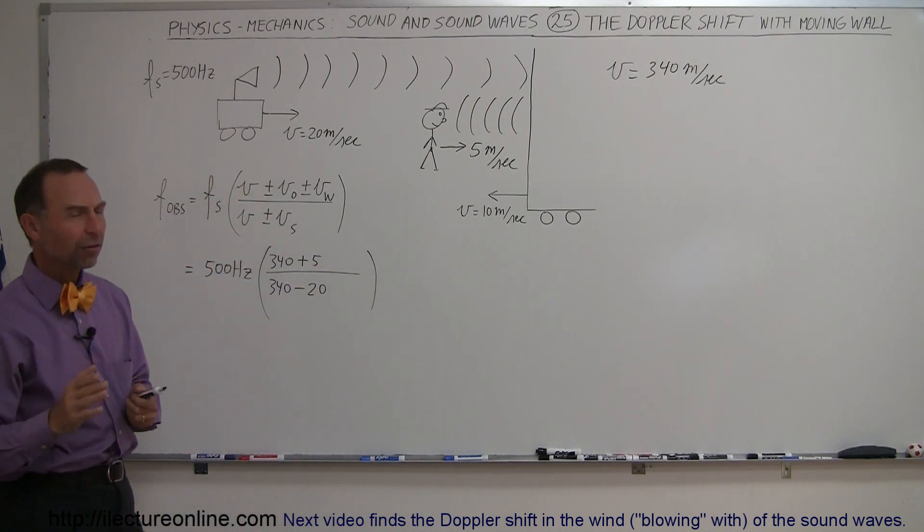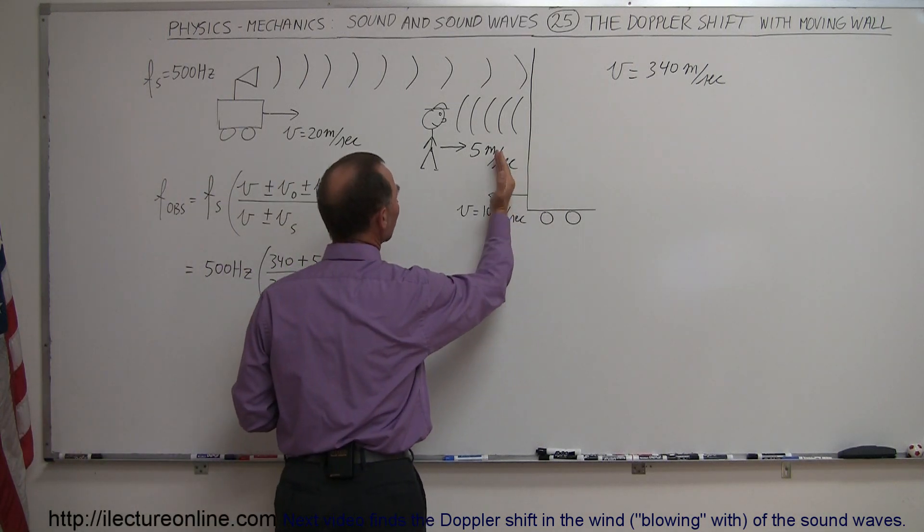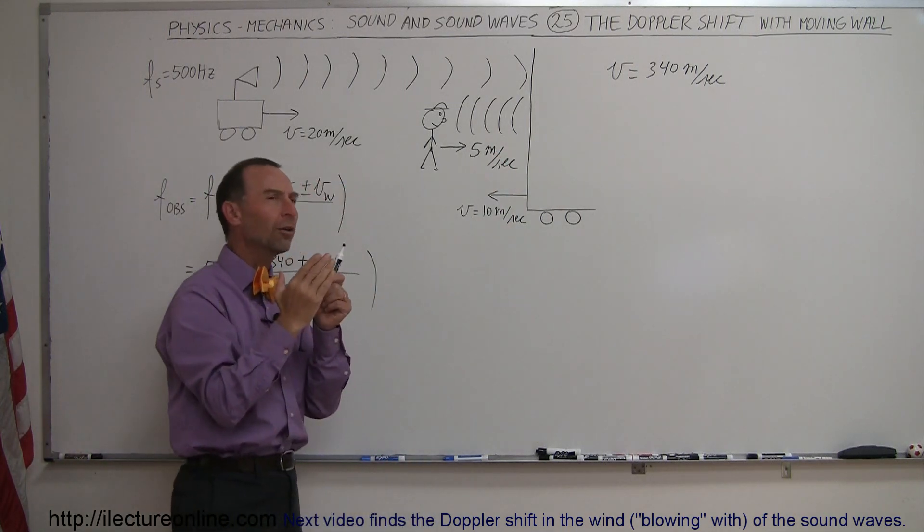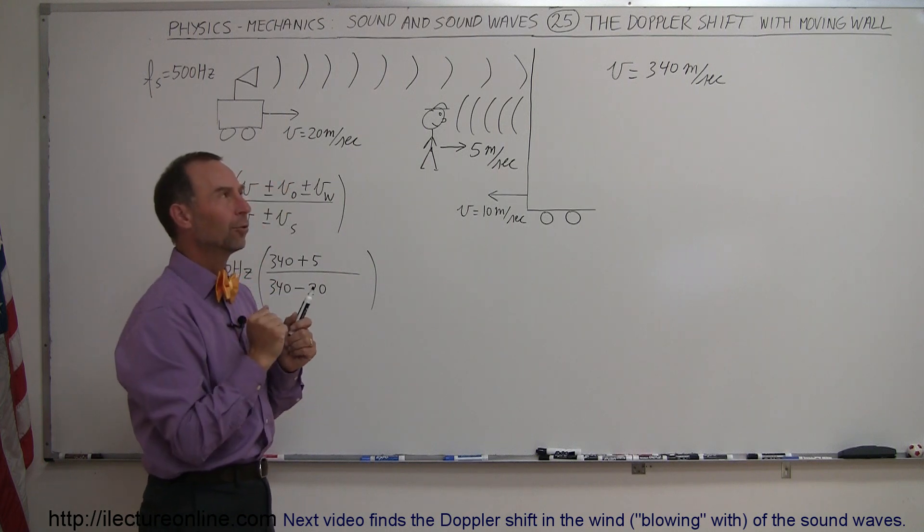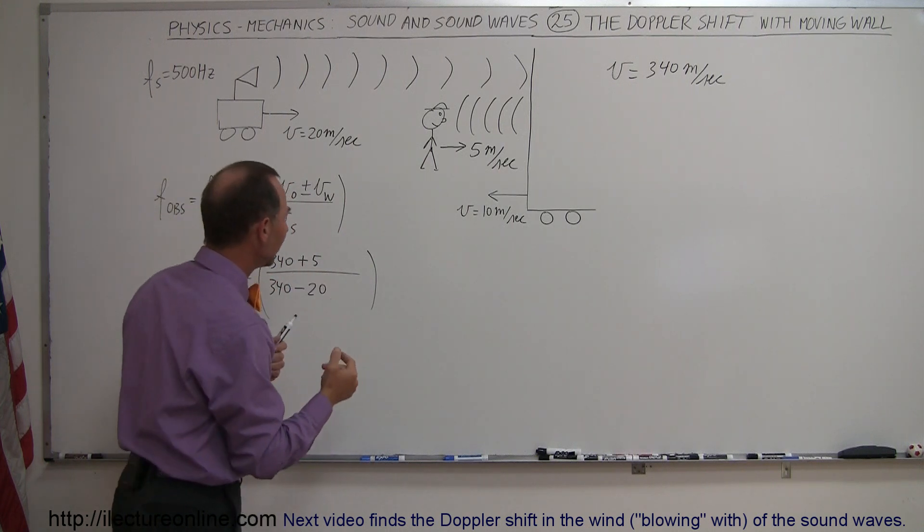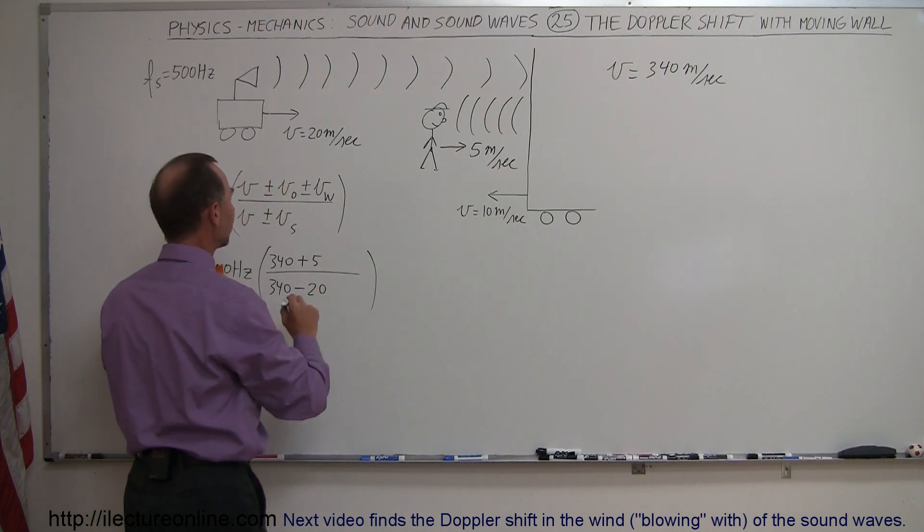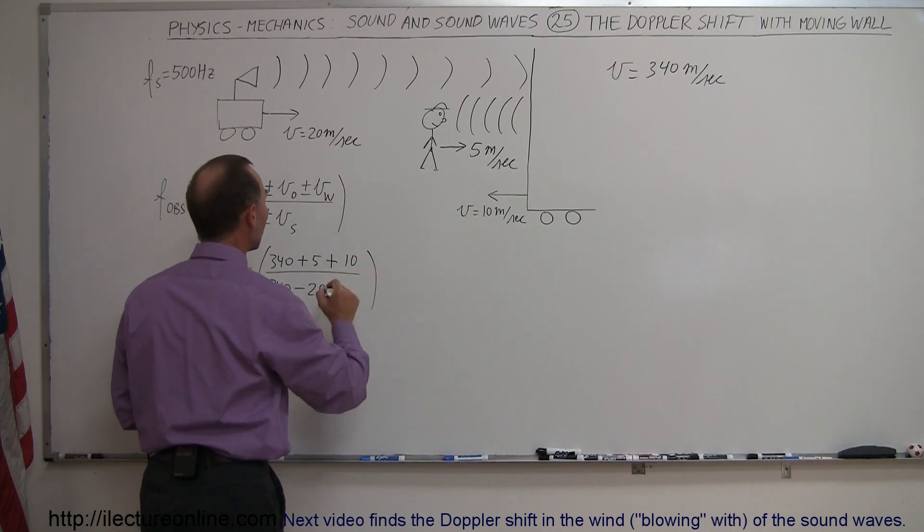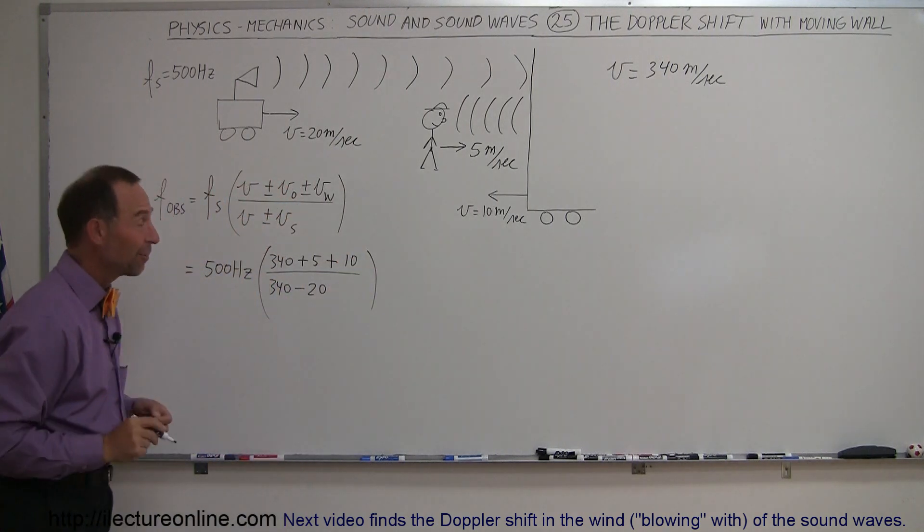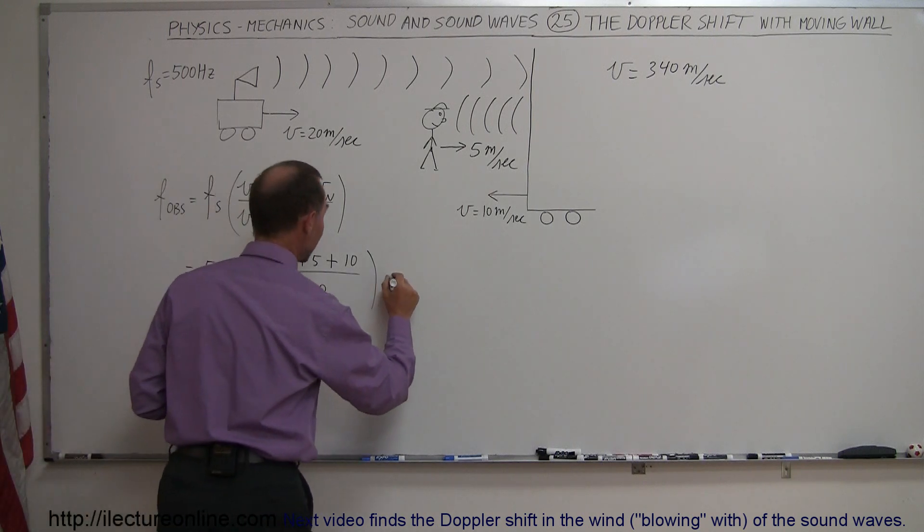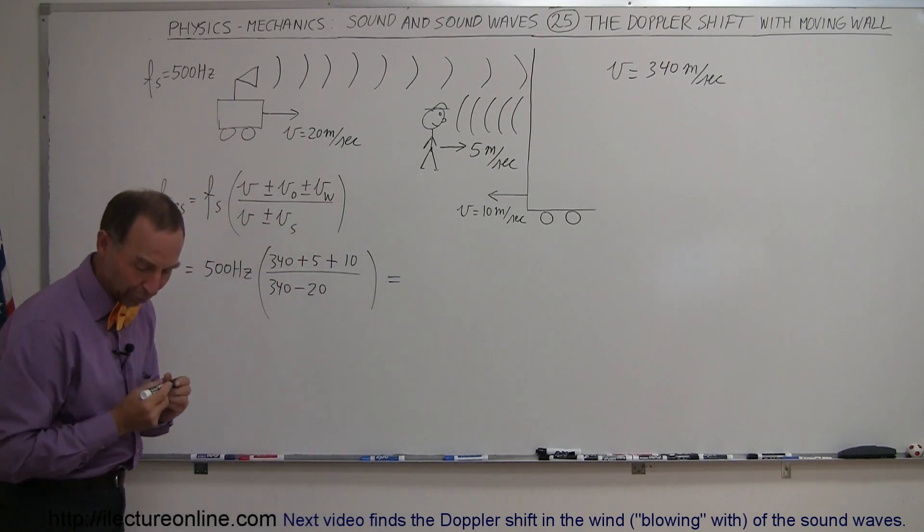And finally, the velocity of the wall. The velocity of the wall moving towards the observer causes the frequency to go up, so I need a bigger frequency, that means I need a bigger number in the numerator, so I need a plus the velocity of the wall. And that's how we find the ultimate frequency that the observer hears.